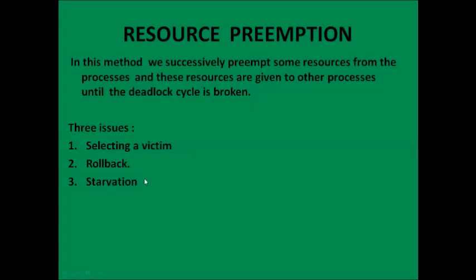The second issue to consider is rollback. When resources are preempted from a process, the process rolls back to some safe state and restarts from that state. In general, it is difficult to determine what a safe state is, so the simplest solution is a total rollback of the process and then restart it.